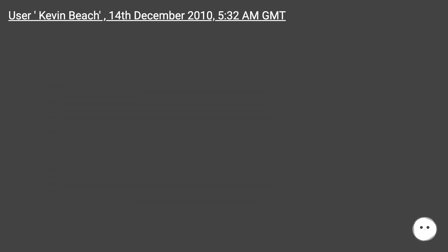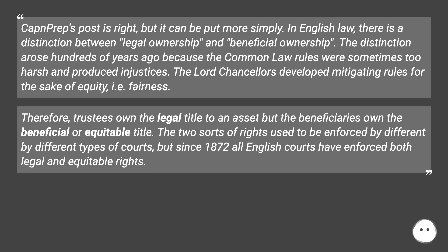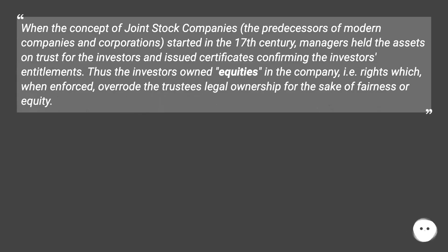User Kevin Beach, December 14th 2010: 'Capn Prep's post is right, but it can be put more simply. In English law there is a distinction between legal ownership and beneficial ownership. The distinction arose hundreds of years ago because the common law rules were sometimes too harsh and produced injustices. The Lord Chancellors developed mitigating rules for the sake of equity, i.e., fairness. Therefore trustees own the legal title to an asset, but the beneficiaries own the beneficial or equitable title. The two sorts of rights used to be enforced by different types of courts, but since 1872 all English courts have enforced both legal and equitable rights.'